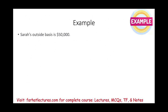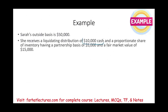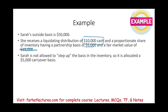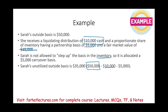Sarah's outside basis is $50,000. She received a liquidating distribution of $10,000 in cash and a proportionate share of inventory with a partnership basis of $5,000 and fair market value of $15,000. We are not allowed to step up the basis of the inventory, and obviously you cannot step up the basis for cash. So $5,000 is allocated to inventory. Sarah started with $50,000, minus $10,000 cash, minus $5,000 inventory, leaving $35,000. Because she received only cash and inventory, the $35,000 is a capital loss — she recognizes a capital loss of $35,000 on the liquidation.